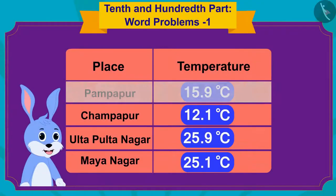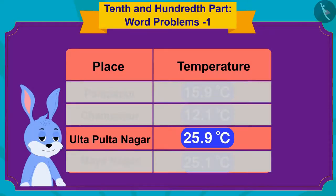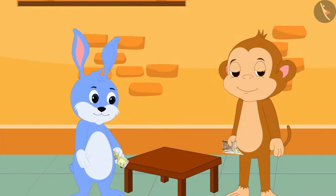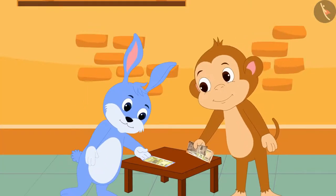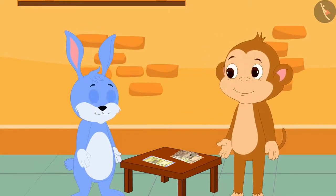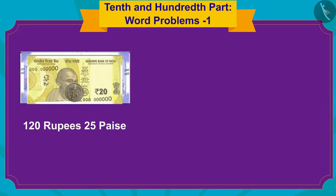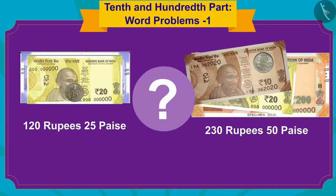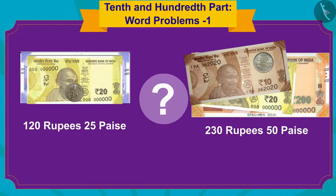Bunny also found the place with the highest temperature just like us. Bunny and Babban collected some money together. Now Bunny is thinking: I have my 120 rupees 25 paise and Babban's 230 rupees 50 paise. How much money do I have in total?